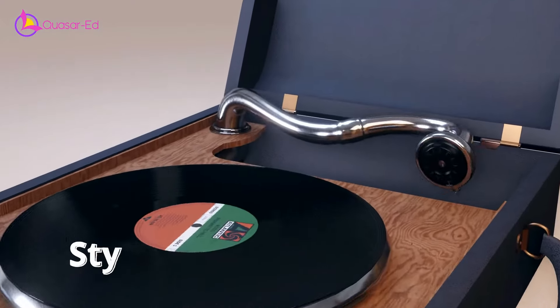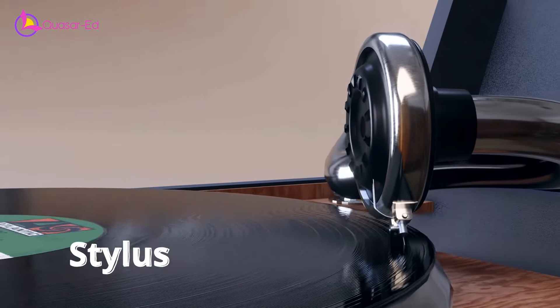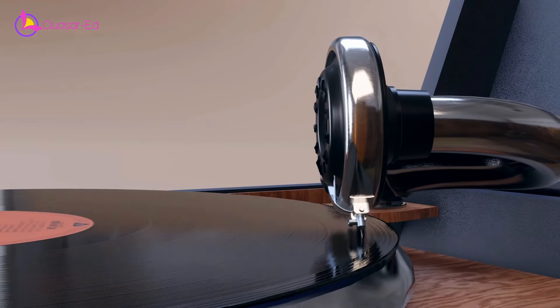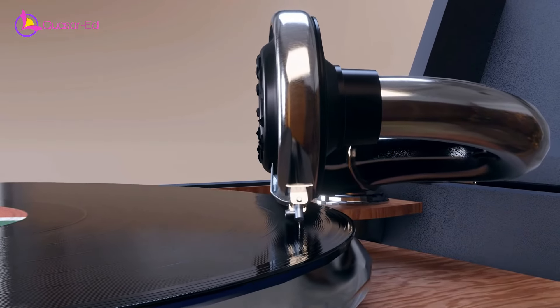For producing sounds, when we place a stylus needle on the rotating record, the grooves on the disc move the needle back and forth, producing the same vibration that we use for cutting these grooves. But these vibrations are not big enough to produce any audible sound.